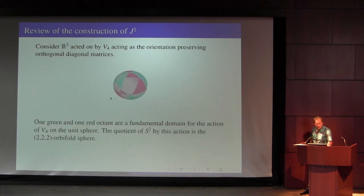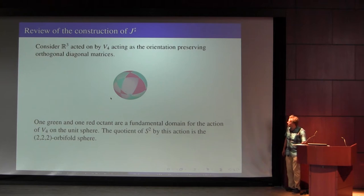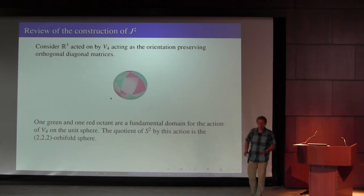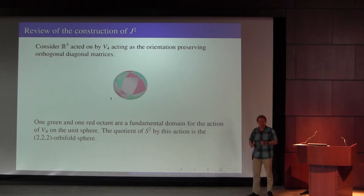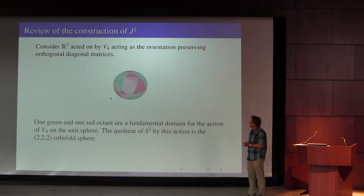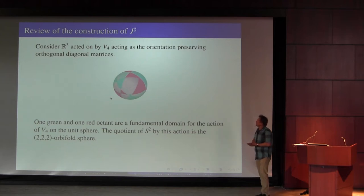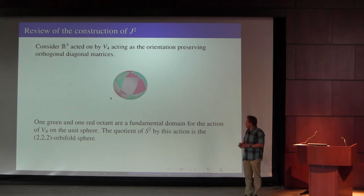The first move is to realize that if I have a trivalent graph in a three-manifold, then I can think of that as giving me a way of defining an orbifold. The point is that if I think of the Klein four-group Z₂×Z₂ acting on ℝ³ by orientation-preserving diagonal transformations — orthogonal diagonal matrices with determinant one — the quotient, acting on the unit two-sphere, is again a sphere.